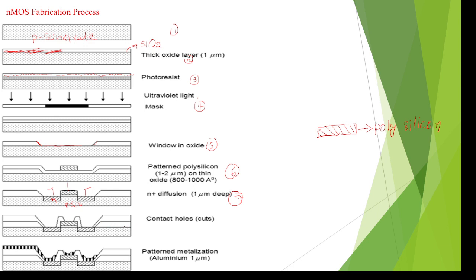To give protection to the surface, the oxidation process is applied again — the total surface is covered with a silicon dioxide layer. In the last step, the total surface is deposited with metal, which is used to give connections to other devices. We can now see the source, gate, and drain terminals.